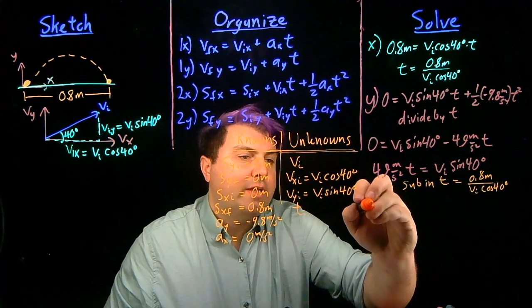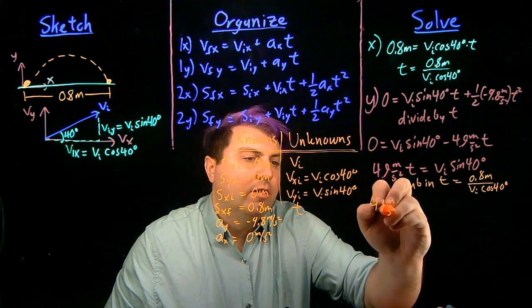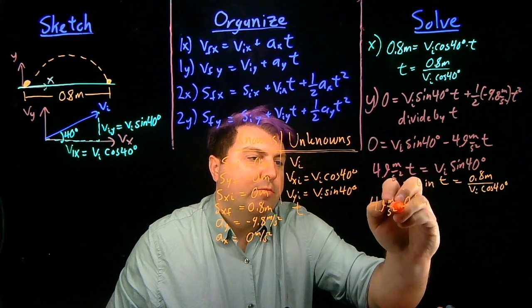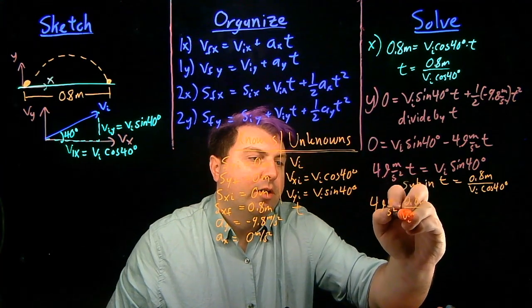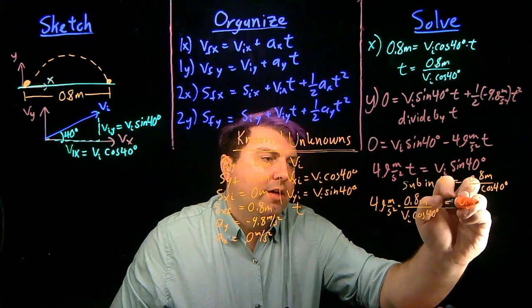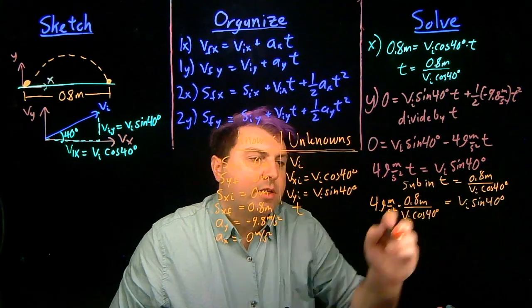So when we do that, we have 4.9 meters per second squared times 0.8 meters over vi cosine of 40 degrees equals vi sine of 40 degrees.